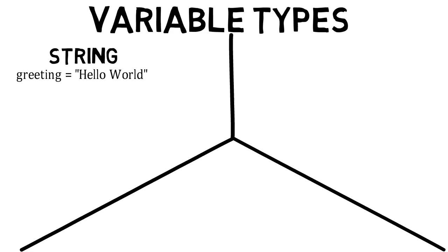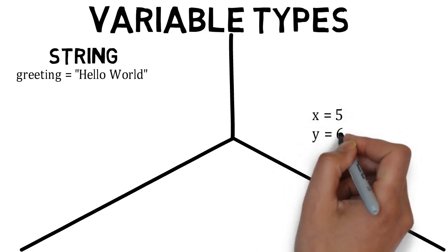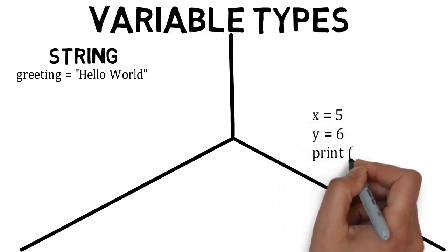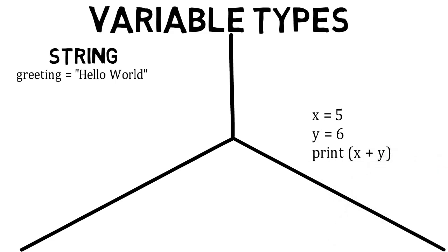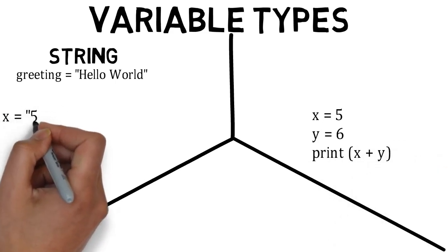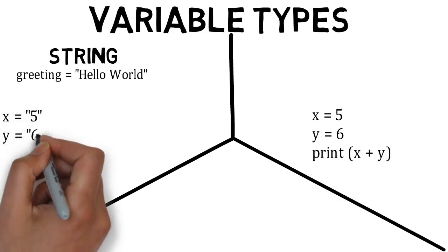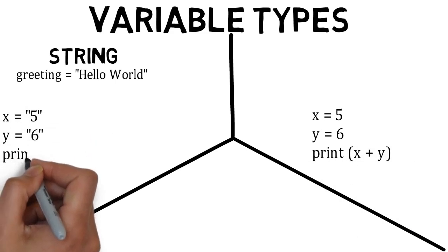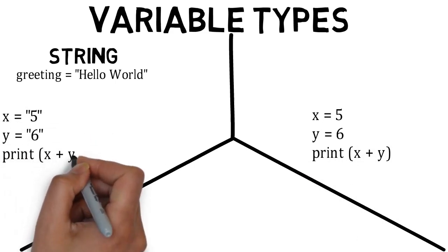Let's take a look at two pieces of code and see how they treat strings differently. x equals 5, y equals 6, print x plus y. x equals quotation 5, y equals quotation marks 6, print x plus y.